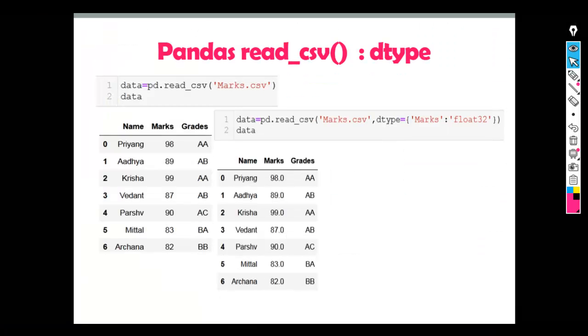Hello coders. In this video I am going to explain the dtype parameter of read_csv. The dtype parameter is used to change the data type of a particular column or columns.